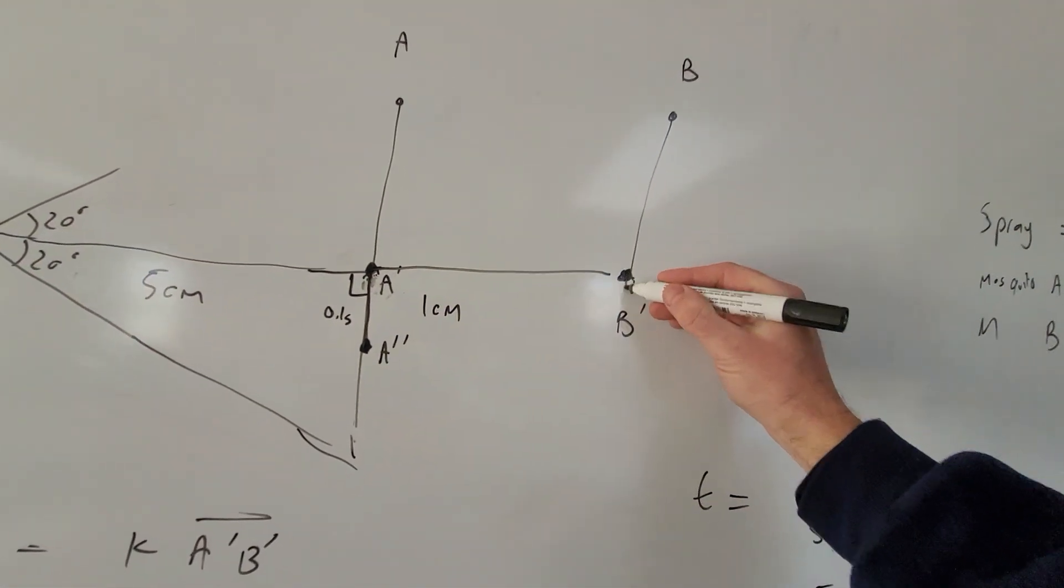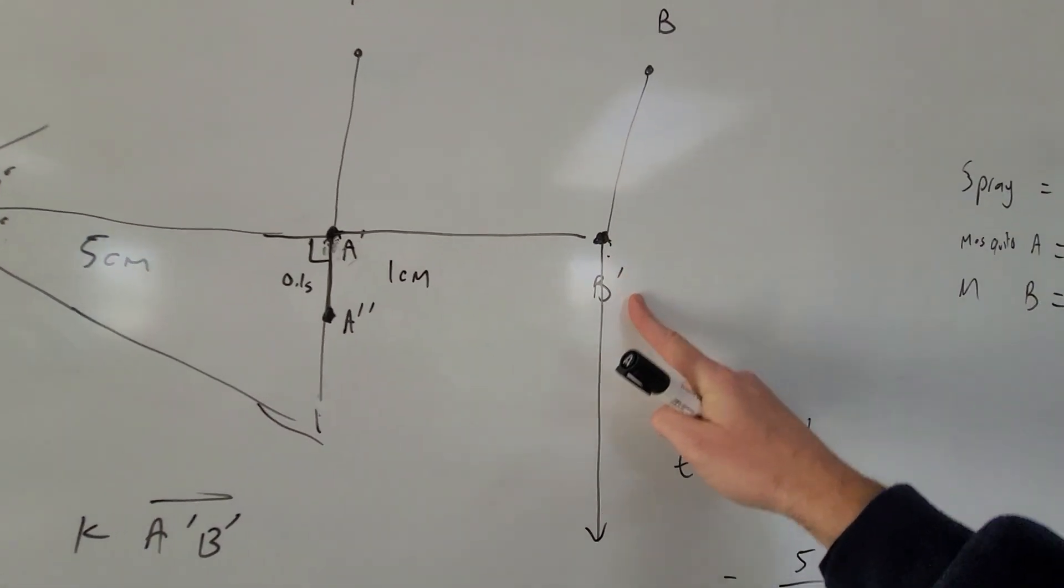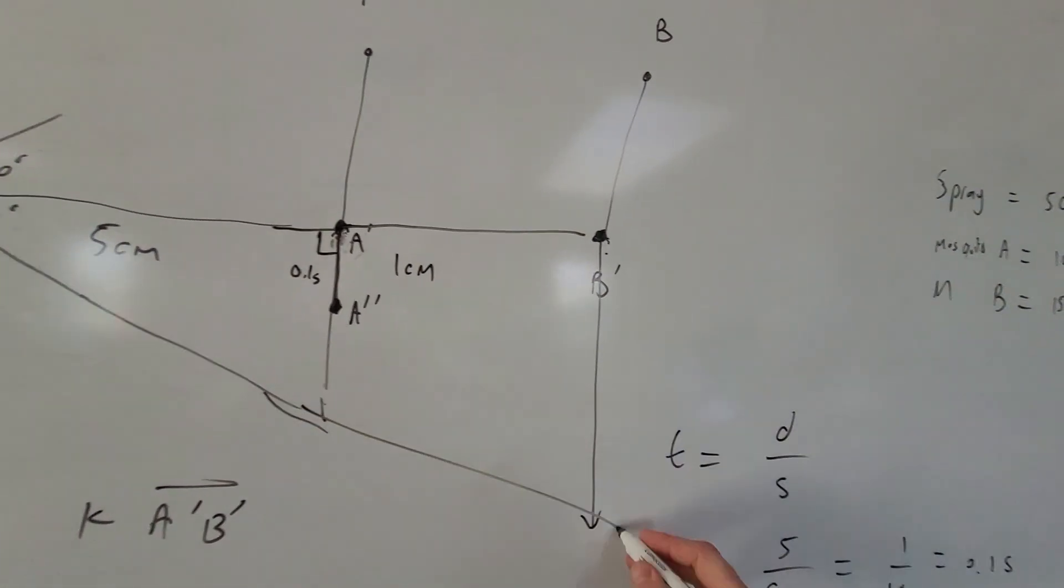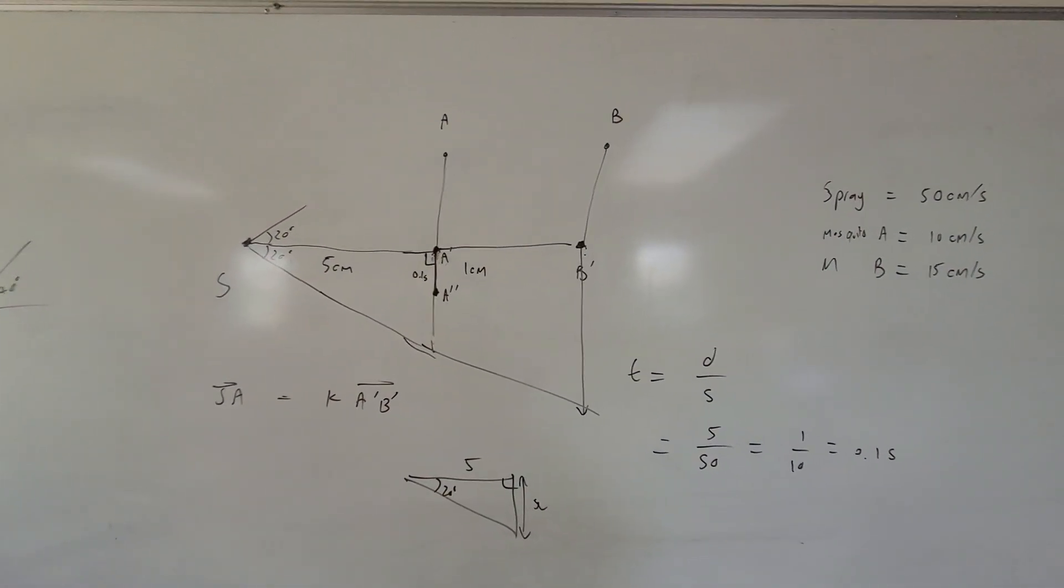And so then we can even anticipate how far is the spray reaching down here. And we can anticipate is mosquito B going to be clear of the cone as well. So that's sort of a fairly primitive way of analyzing it.